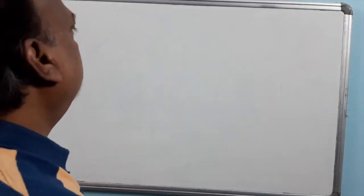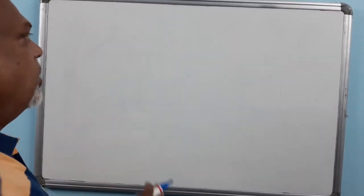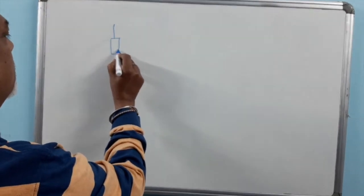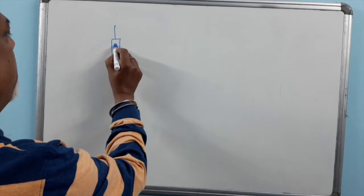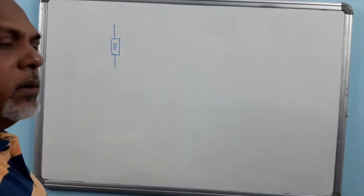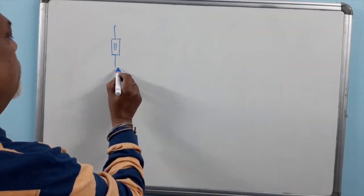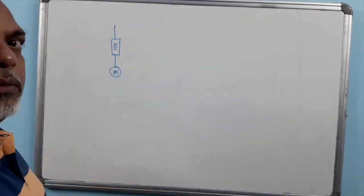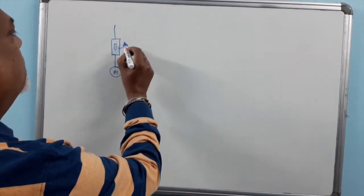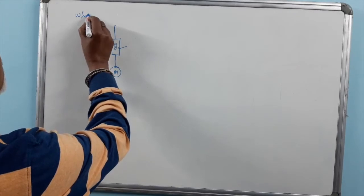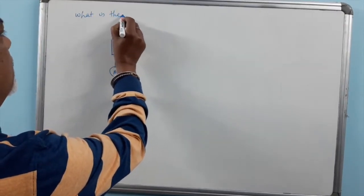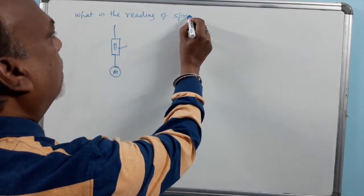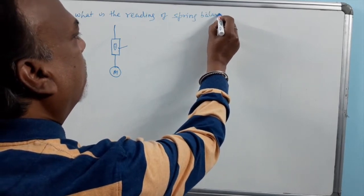Suppose you have a spring balance and you have a mass m. What will be the reading of this spring balance?